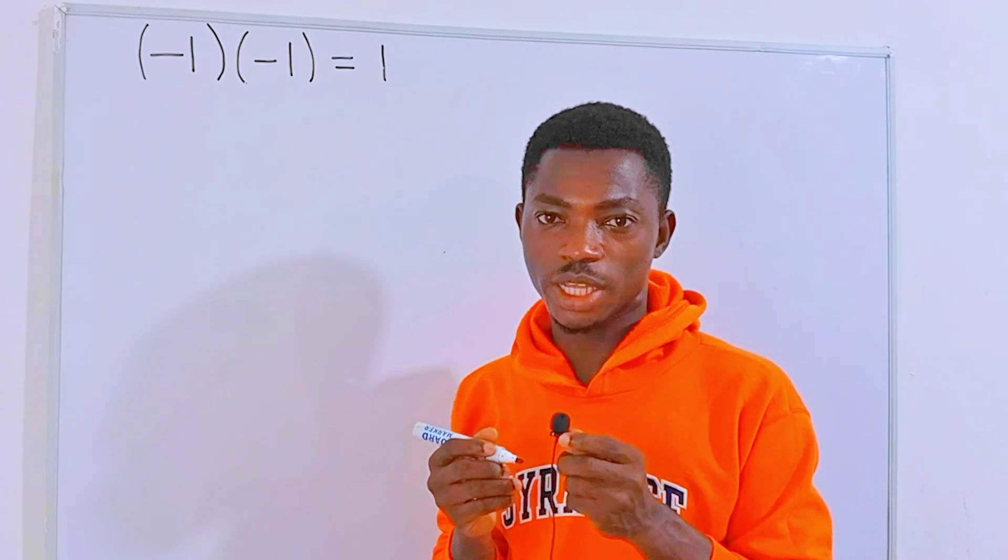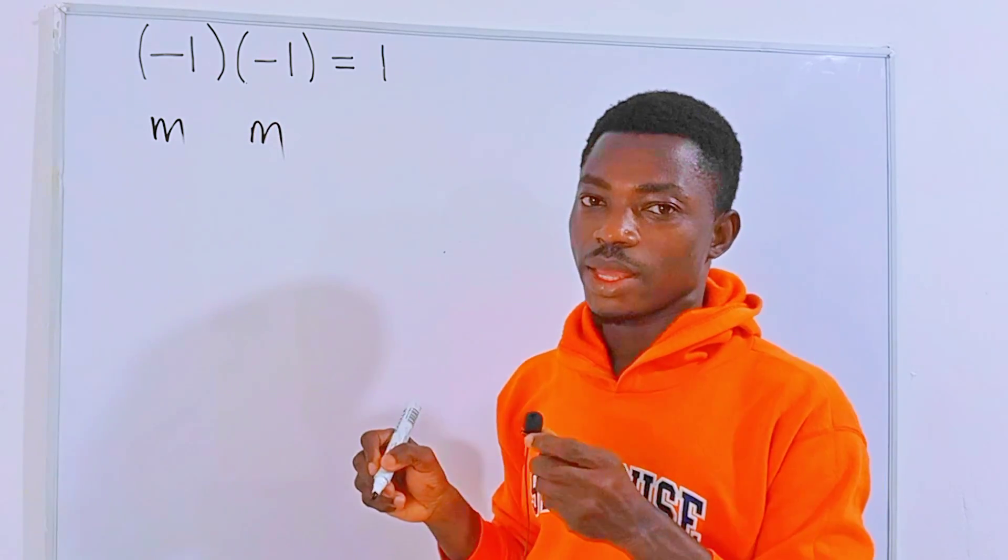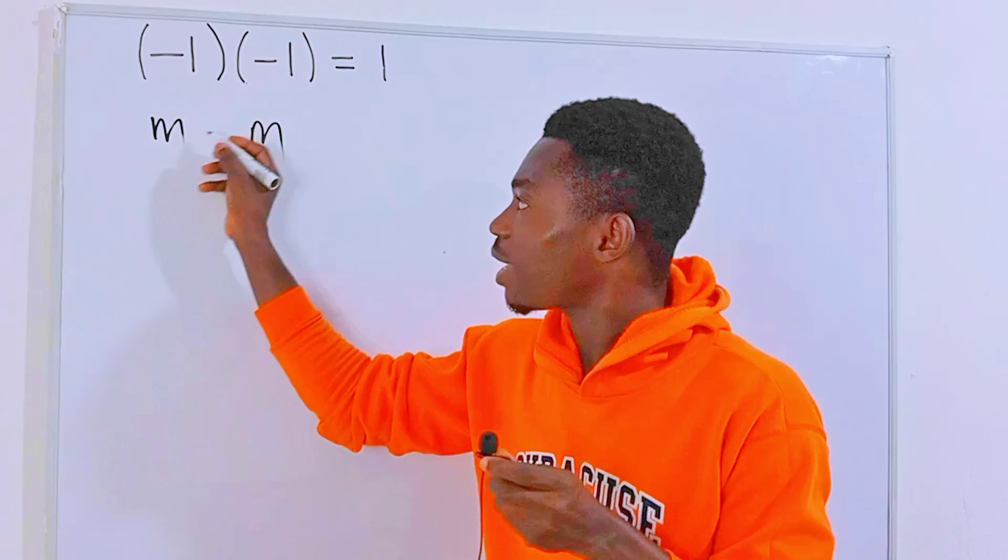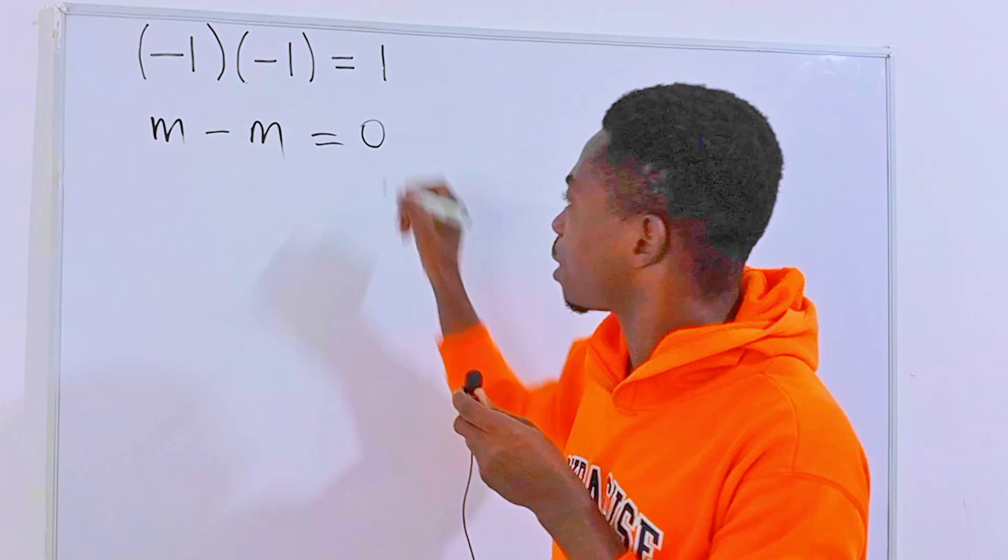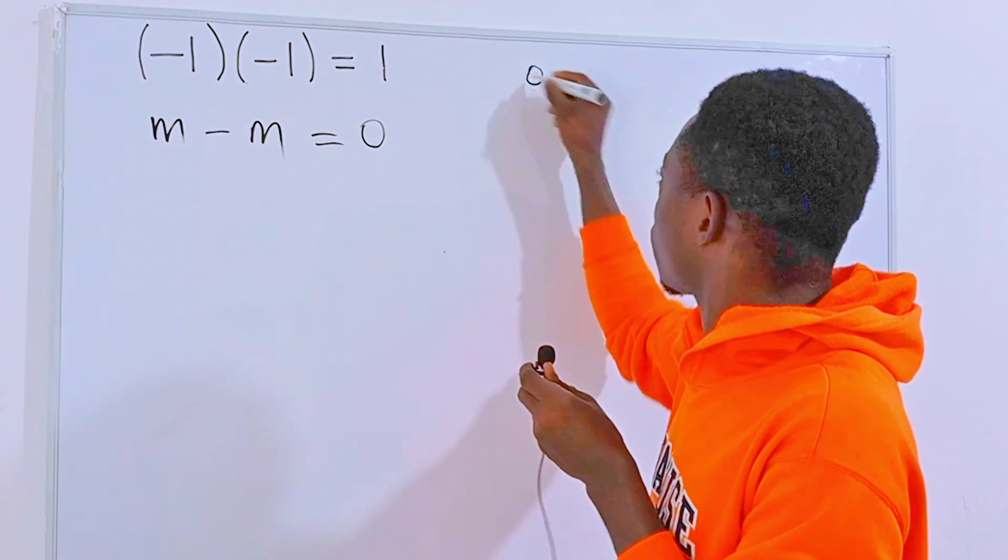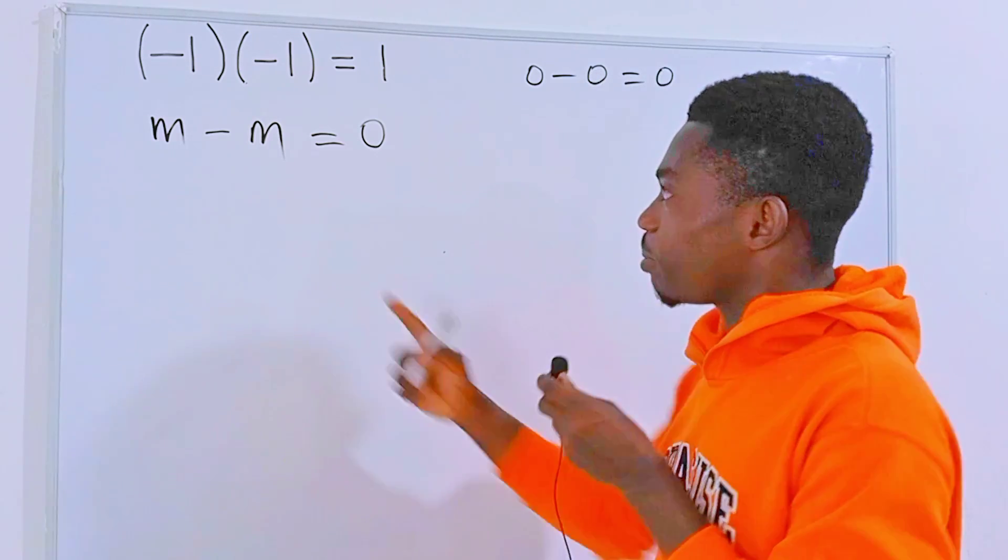Let's say I have two same numbers, m and m. If I subtract one from the other just like this, the result will always be zero. In the same way, zero minus zero is equal to zero.